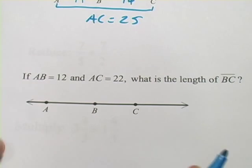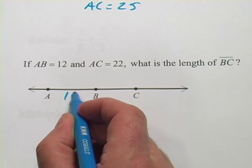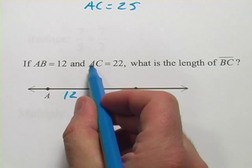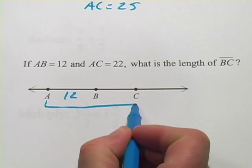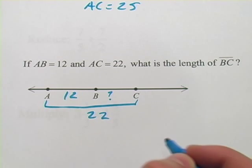Let's look at one that's just slightly harder. This one says AB is 12, so this distance is 12. AC, so the whole distance is 22, and we want to find BC. We want to find this distance in here.